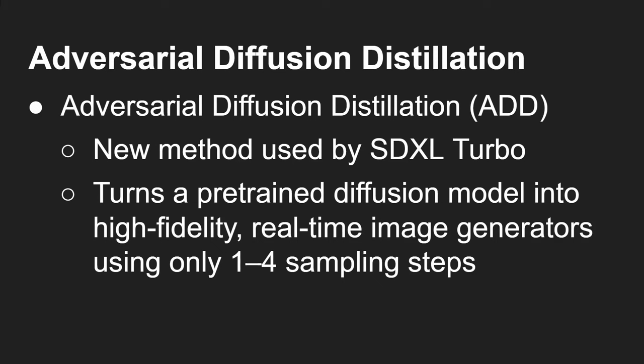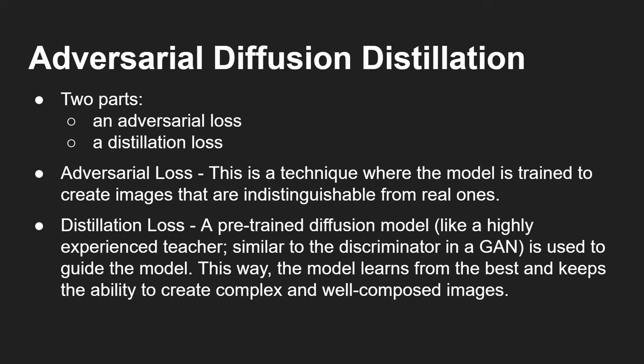That's what Stable Diffusion XL Turbo is. They've done it using a technique called Adversarial Diffusion Distillation, or ADD. It's the new method used by SDXL Turbo, and it turns a pre-trained diffusion model into a high-fidelity real-time image generator using one — and up to four — steps. It has two parts: adversarial training, where the model aims to fool a discriminator, and distillation loss, a technique where the model is trained to create images indistinguishable from real ones. The teacher in this case is actually a diffusion model, guiding the student model. This way the model learns from the best and keeps the ability to create complex, well-composed images — it's a new approach combining GANs and diffusion models.